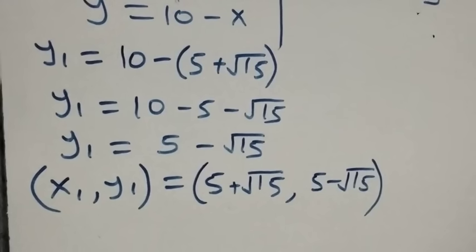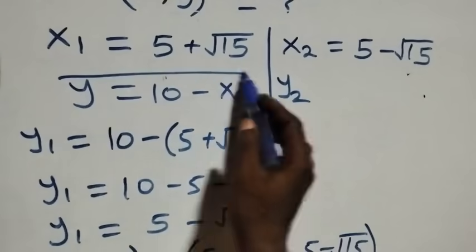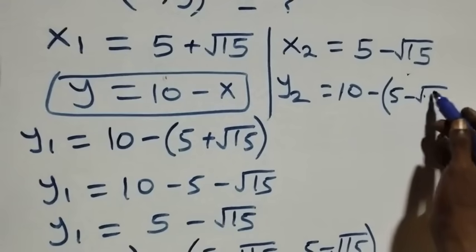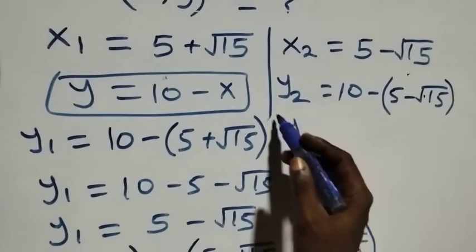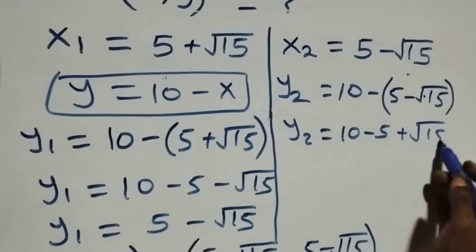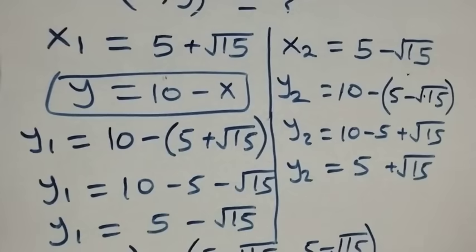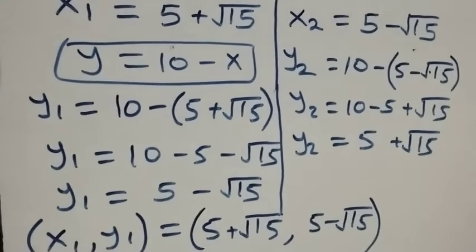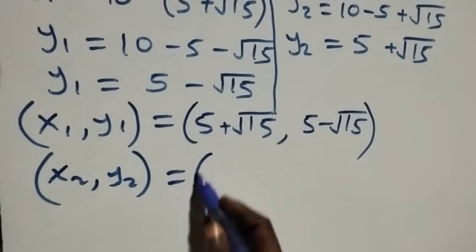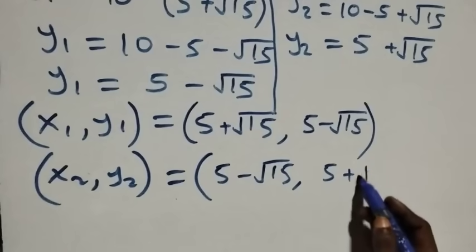For the second case, y₂ equals 10 minus x₂, which is 10 minus (5 minus root 15). Opening the bracket gives y₂ equals 10 minus 5 plus root 15, so y₂ equals 5 plus root 15. The second solution set is x₂ comma y₂, which is (5 minus root 15, 5 plus root 15).